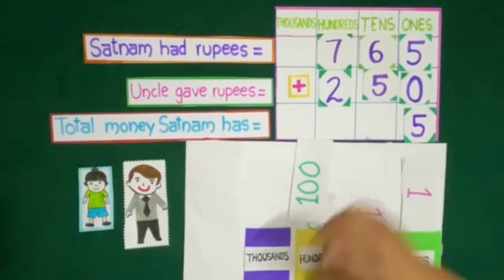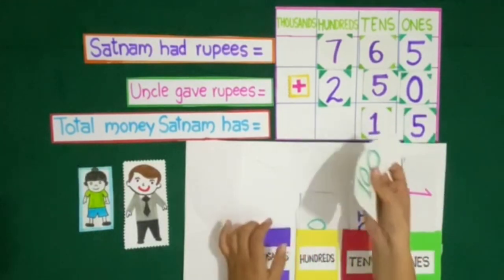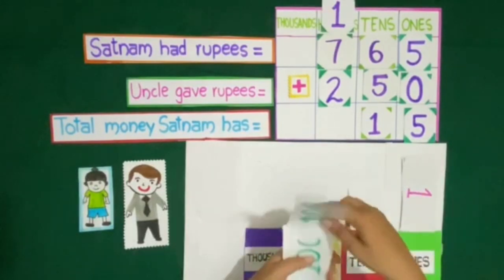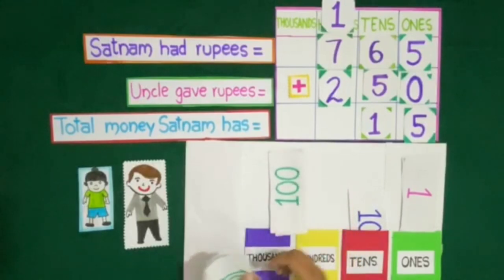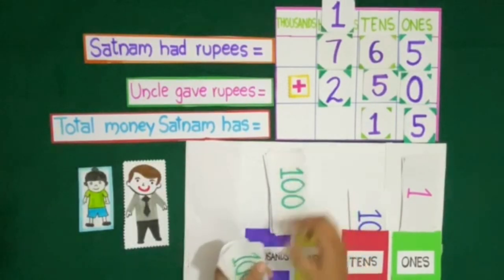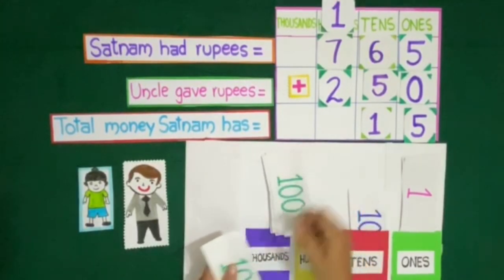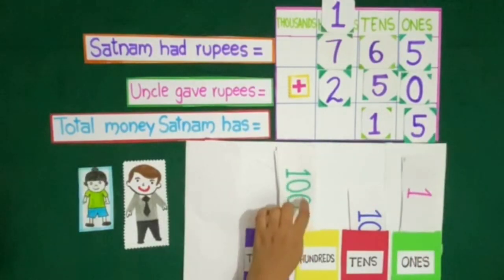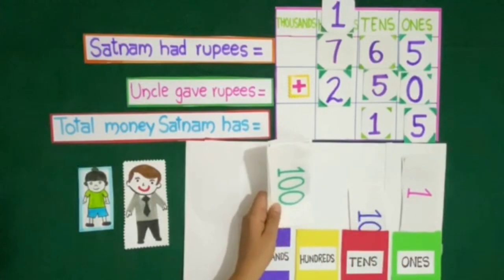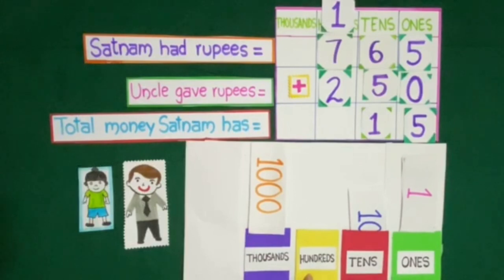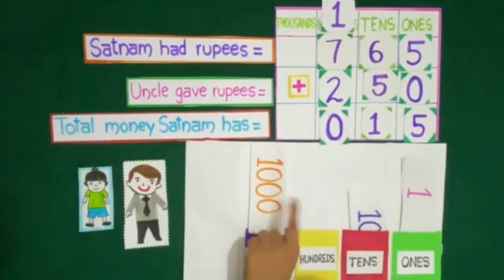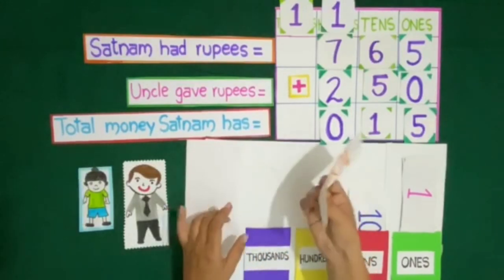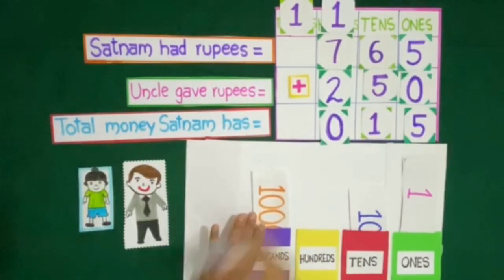Now let us count the 100 rupee notes: 100, 200, 300, 400, 500, 600, 700, 800, 900 and 1000. We know that 10 hundreds are equal to 1000, so instead of taking 10 notes of rupees 100 we will take 1 note of rupees 1000. So here we have no note of rupees 100, so we place 0 at 100's place, and we place 1 at 1000's place. We have 1 note of rupees 1000, so 1 is placed at 1000's place.